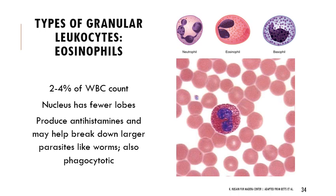Eosinophils account for 2 to 4 percent of white blood cells. They have pinkish granules and fewer lobes in their nucleus than neutrophils. They produce antihistamines to manage histamine production from foreign intruders or immune sensitivity. They can also break down larger parasites — elevated eosinophil levels are associated with parasitic worms — and they secrete compounds to help break down larger structures. They can also be phagocytotic.